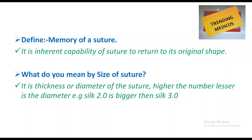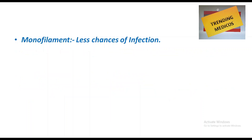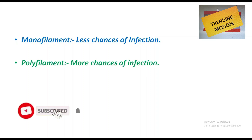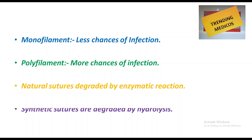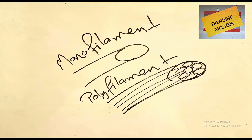The size of the suture refers to the thickness or diameter of the suture. The higher the number, the lesser is the diameter. For example, silk 2.0 is bigger in diameter than silk 3.0.